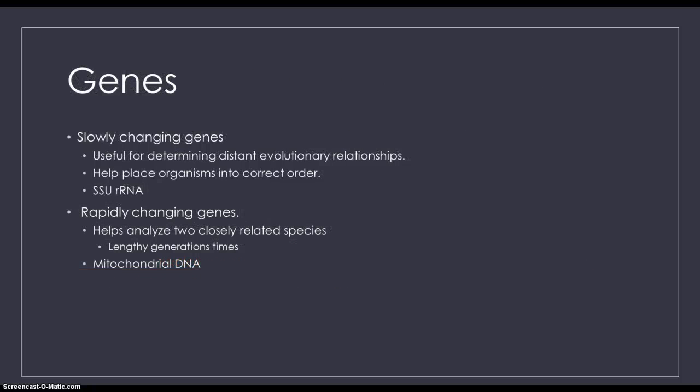So genes. Different genes are analyzed to study phylogeny. Slow-changing genes are useful for determining very distant evolutionary relations. A great example of this is SSU rRNA. It is in every single living organism in the world. And since it is in every organism, we know that it's existed for a very long time and it's slow-changing. So scientists can use genes like this to place organisms into their proper order.